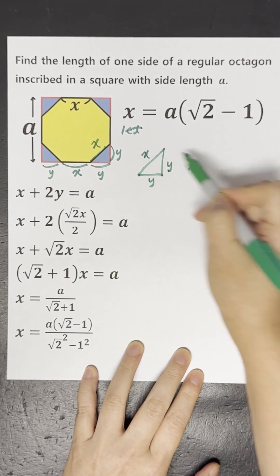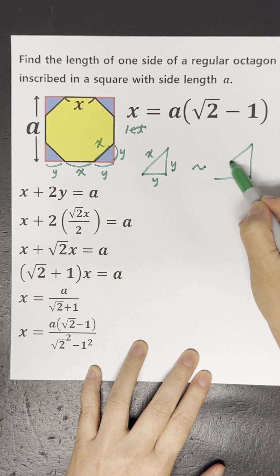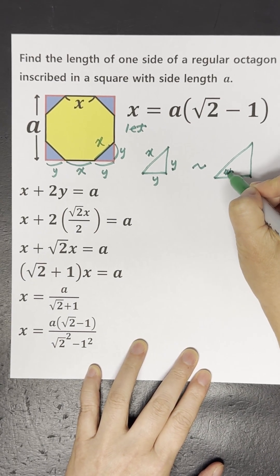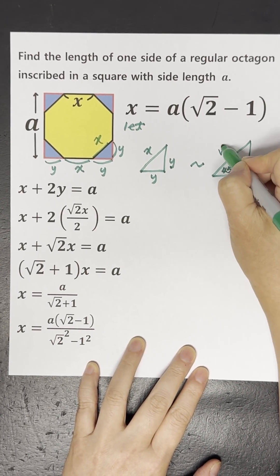Then we'll compare it to a special triangle with a 45 degree angle, which has sides 1, 1, and square root 2.